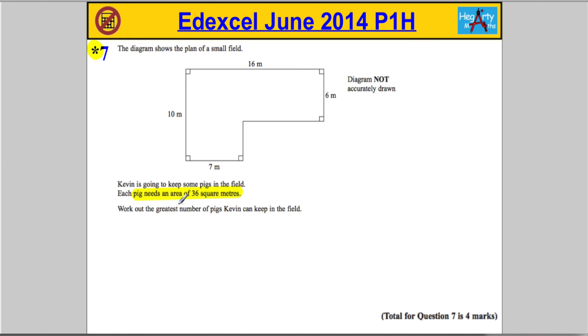Right, first and foremost, I can see this is an area question. So what I'm going to do is work out the total area of Kevin's field. I don't know any formula to work out the area of this type of upside-down L-shape, but I do know how to find the area of rectangles. So I'm going to split it into two rectangles.